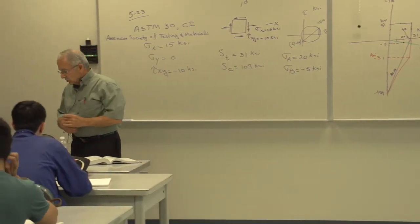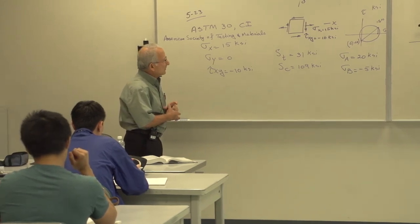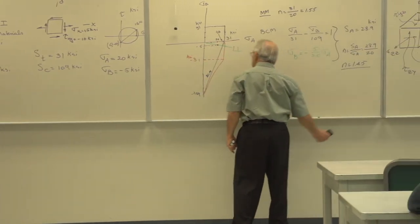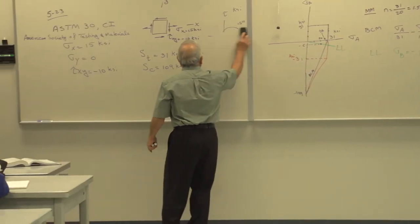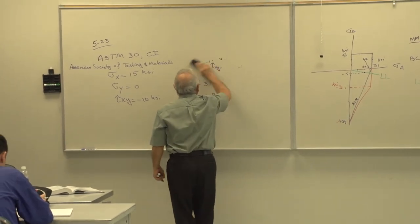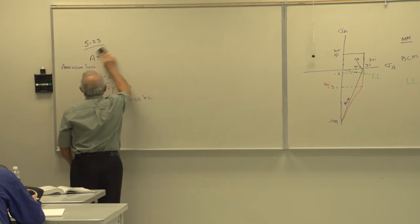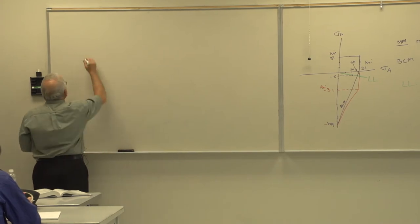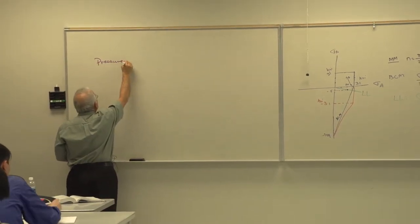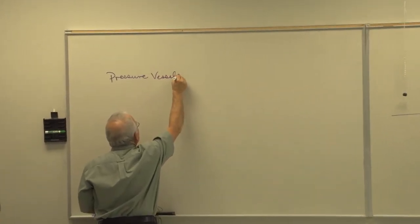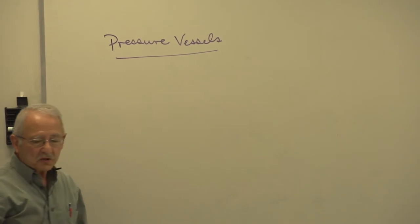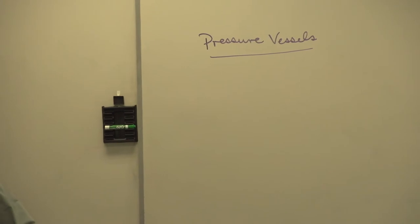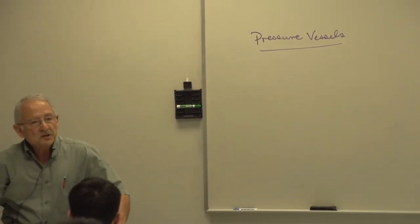That concludes our look at various static failure theories. Remember, these were all static failure theories — no speed of loading involved. Now we will take a look at pressure vessels. What we say about pressure vessels, in many instances, is good for pipes as well.